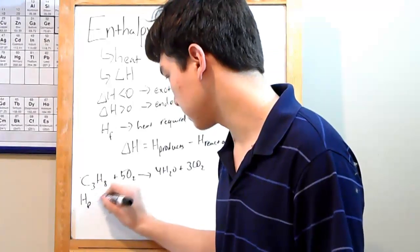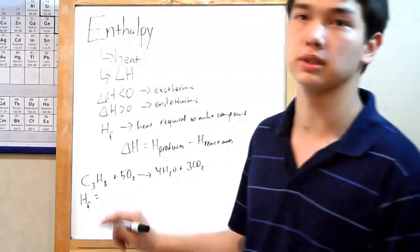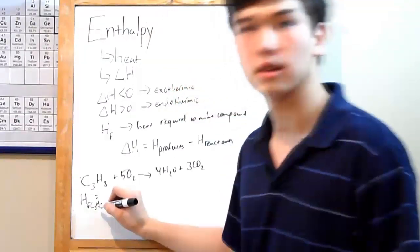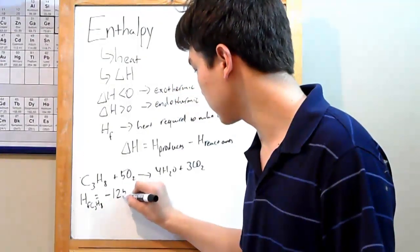The HF, and I'm just making these numbers up, you'll be given the right numbers. For C3H8 will be negative 1,250 kJ.